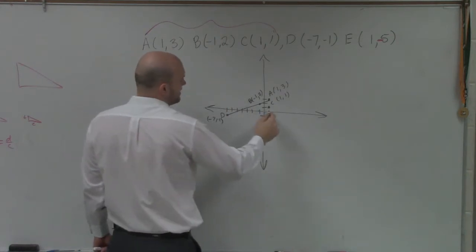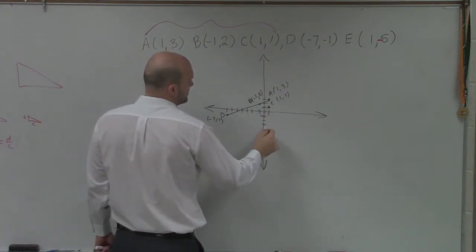And then I have E, which is 1, negative 5. 1, negative 5. 1, 2, 3, 4, 5.